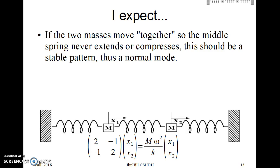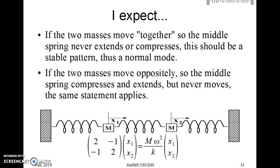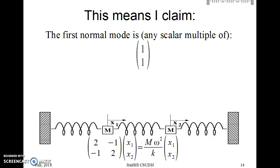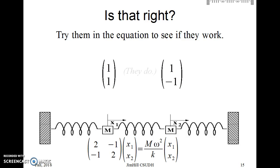I can try this. I have to translate it into math first. So I claim the first normal mode, the first thing I talked about, is the two things moving together. The two coordinates are the same. So it's a scalar multiple of the vector 1, 1 in this language. The other thing, moving oppositely, is any scalar multiple of the vector 1, minus 1. Put them in. See if they work.